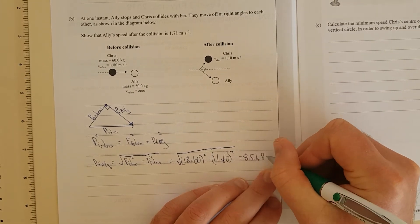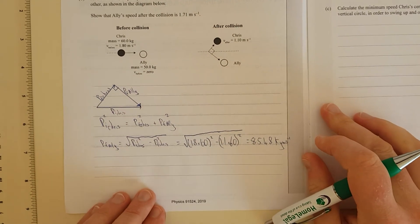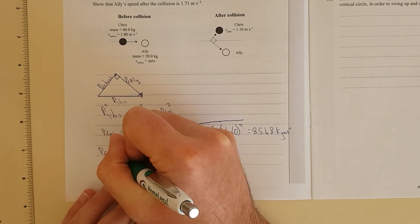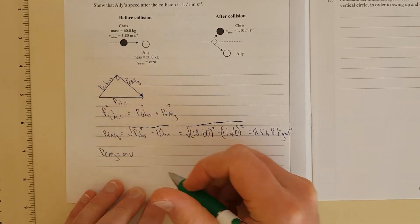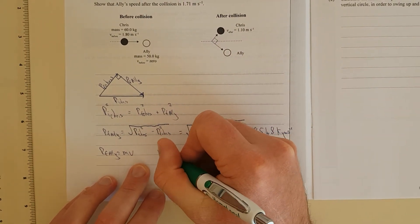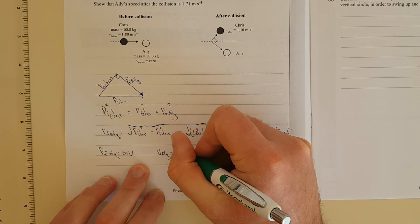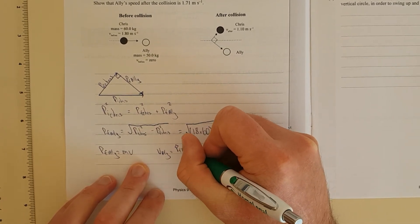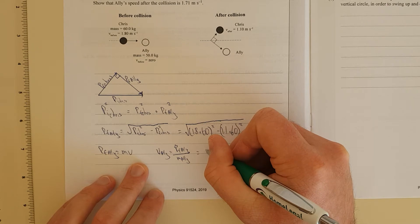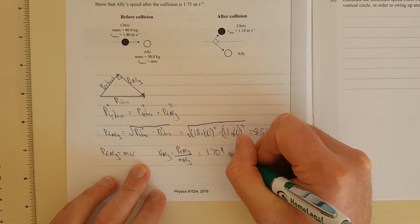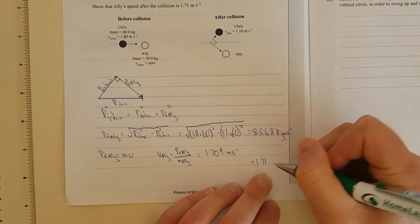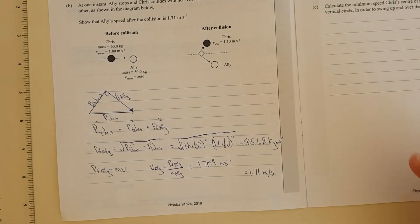Now we need p Ali. Momentum final of Ali equals mass times velocity. In other words, the velocity of Ali equals the momentum of final Ali over the mass of Ali. That equals 1.709 meters per second. Then we're going to round to 3 significant figures, which equals 1.71 meters per second. There we go. Right, next question.